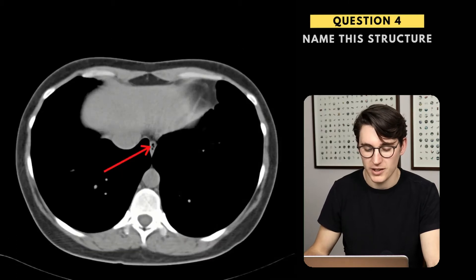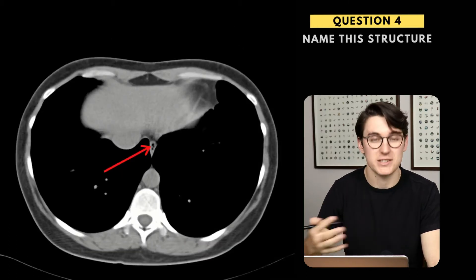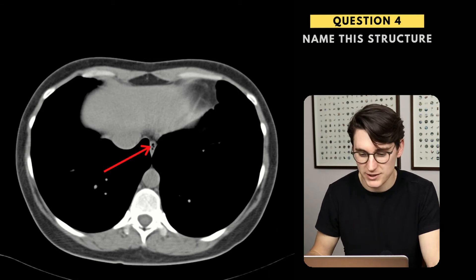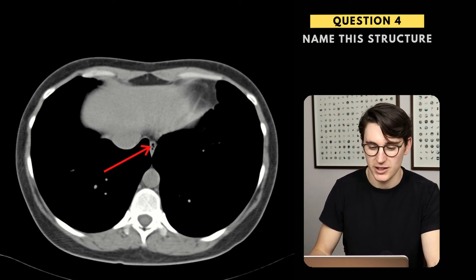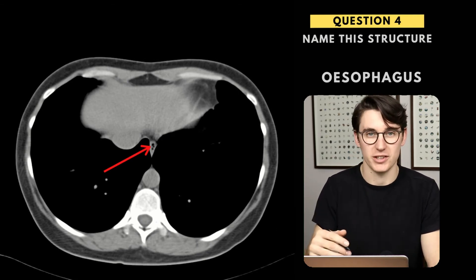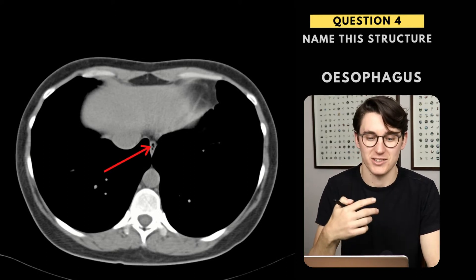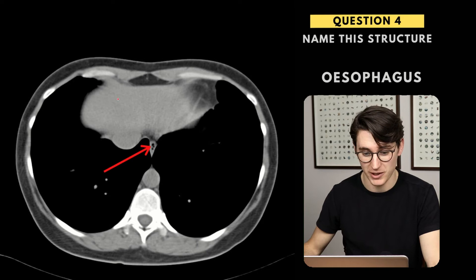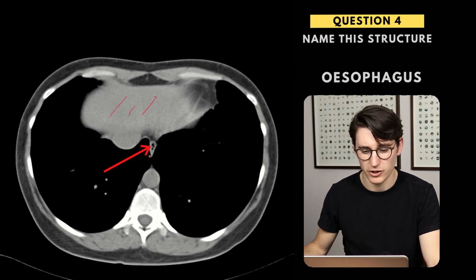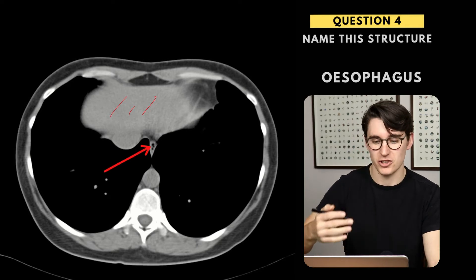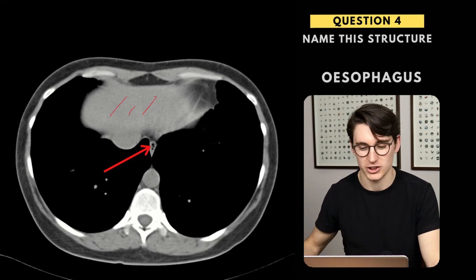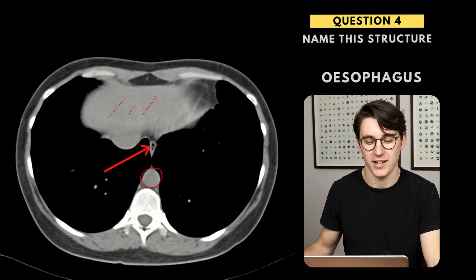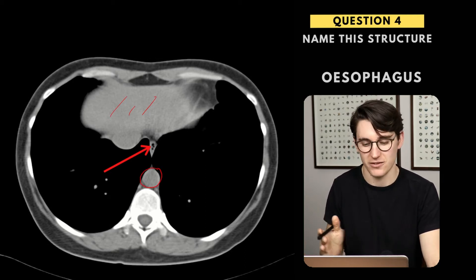Question four. Here we've got an axial CT of the thorax. We're asked to label this structure, and this is the esophagus. If you want to be more specific, it's the distal esophagus because we can see we're cutting the diaphragm here, with a bit of liver showing in the soft tissue window. So we know we're at the end of the esophagus, just before our OG junction. We can also see our descending thoracic aorta there, just slightly on the left hand side of that vertebral body.